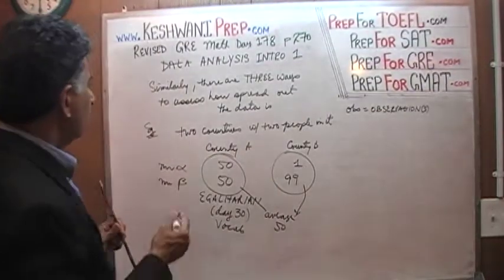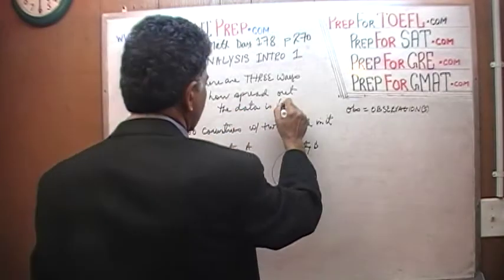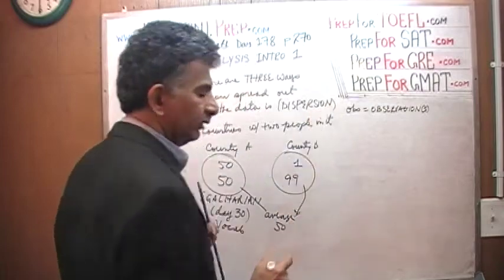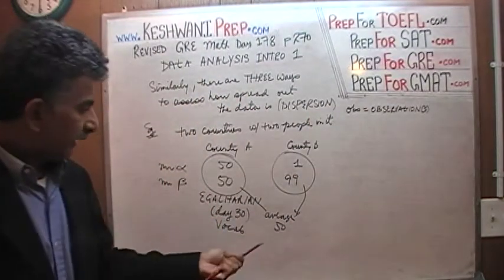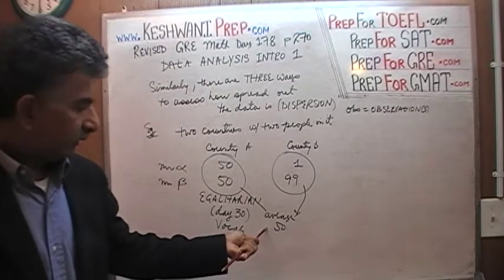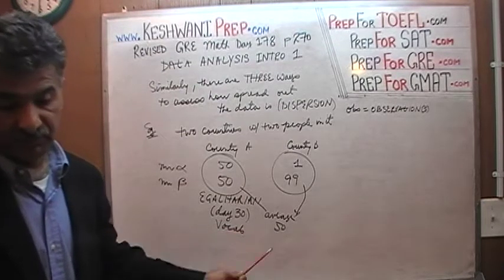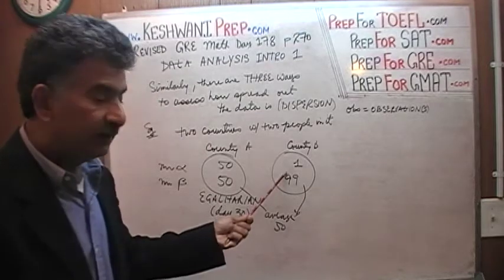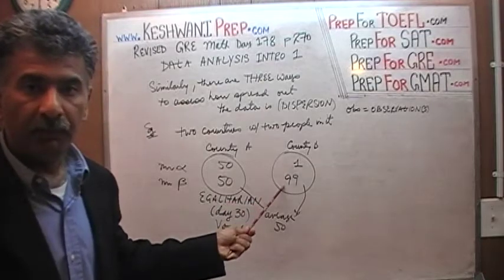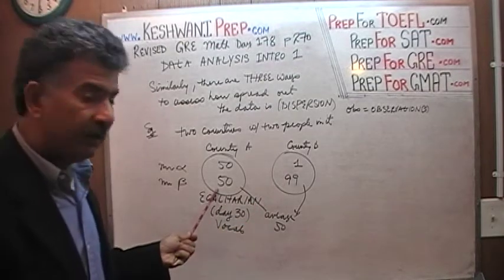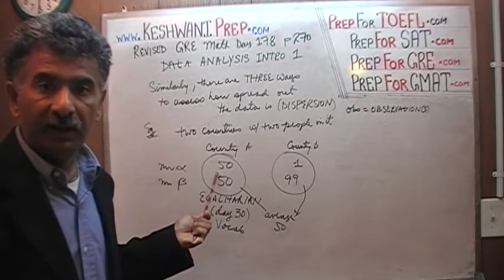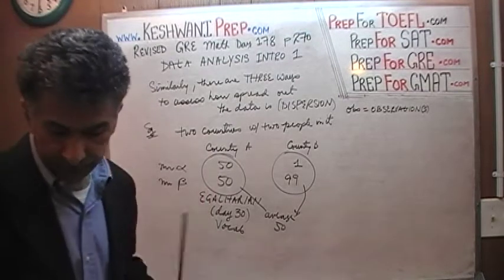To assess how widespread the data is — that is called dispersion. How dispersed is the data? The mean does not tell us that. It makes both countries look the same — both have an average income of $50,000 — whereas in country B there is a huge disparity between the rich and the poor, whereas in country A it is fairly even.